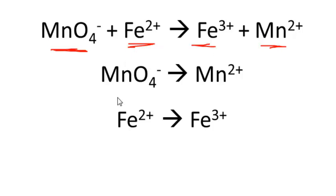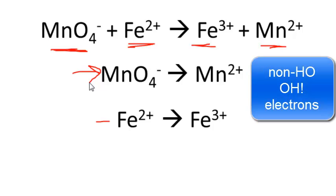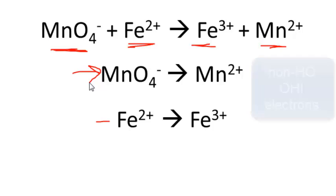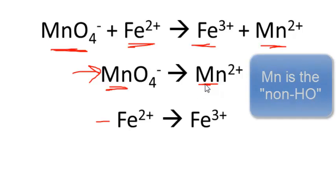Now we balance each half-reaction separately, starting with the permanganate to Mn²⁺ half-reaction. Remember the order: non-H/O, then O, then H, then electrons. The only element that's not oxygen or hydrogen here is manganese — there's one manganese on each side, so it's already balanced. Non-H/O is done.